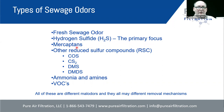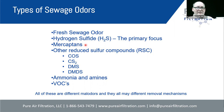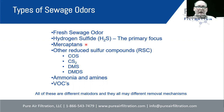Mercaptans are a reduced sulfur compound in this family. Ethyl mercaptan and methyl mercaptans have a very, very low odor threshold — you can smell them at the parts per trillion level. Mercaptans are the gases added to natural gas so that you can smell a leak. Natural gas actually doesn't have a smell — mercaptans are added so you can detect it. So if you've ever smelled a natural gas leak, you know what mercaptans smell like.